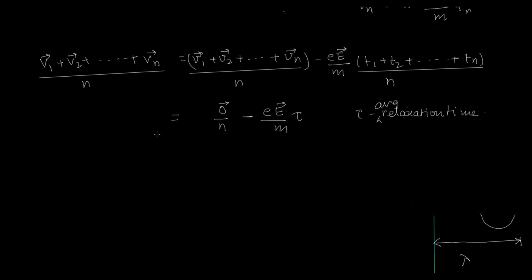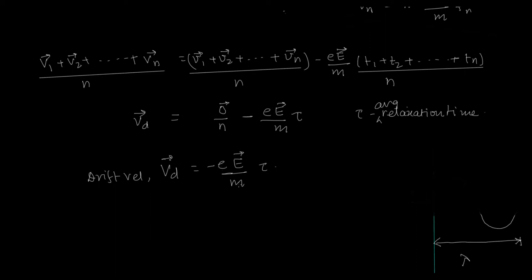Now this term I call the drift velocity. So my drift velocity vd is equal to minus eE upon m times tau. Since tau is a constant, e is a constant, E is a constant, and m is a constant, this drift velocity is a constant with respect to both the direction and the magnitude.